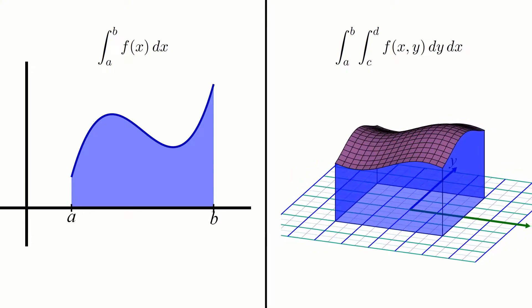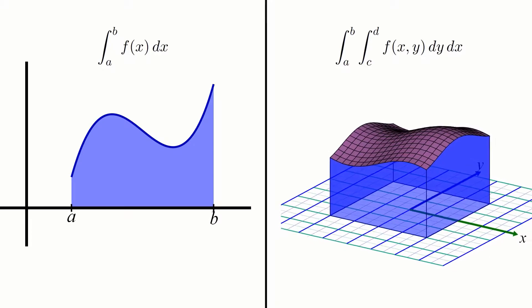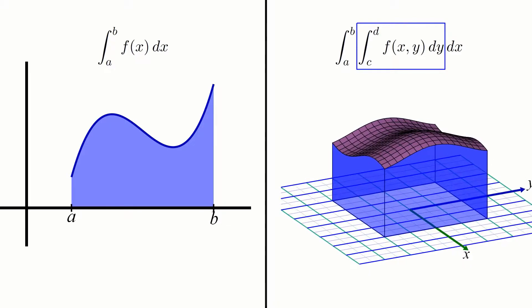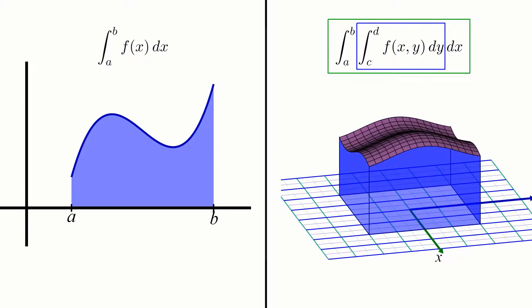But why is this integral of an integral construction the right way to do it? And how do you know how to set one up, anyway? What is each piece of this double integral really doing under the hood, so to speak?